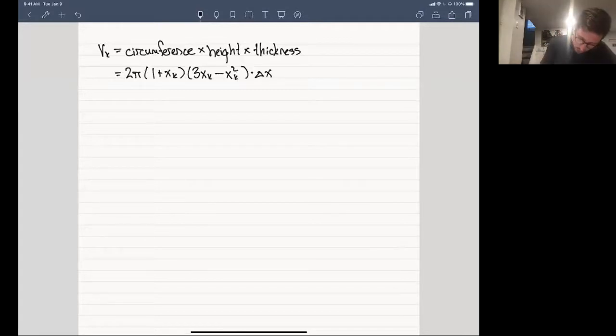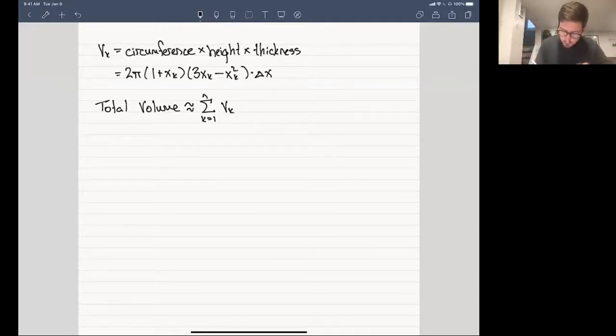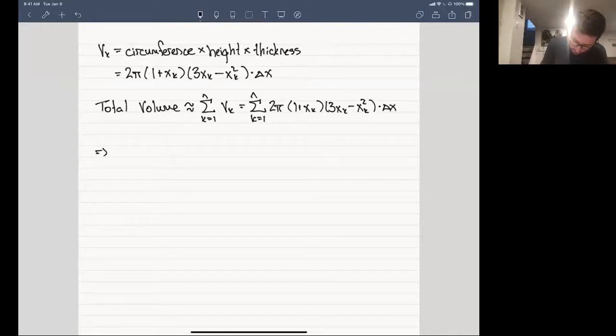And so that tells us that the total volume by this Riemann sum approach is approximately the sum over all of these cylindrical shells that we're using to build this thing out, which is equal to exactly what we have written above, which is 2 pi times (1 plus xk) times (3xk minus xk squared) times delta x. And so we know where this is going, right? We can let n go to infinity.